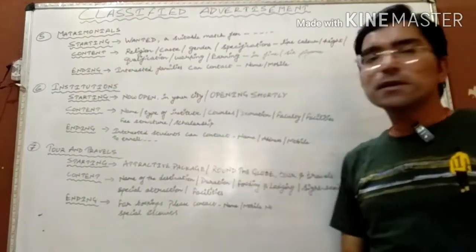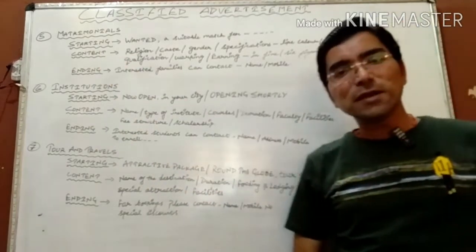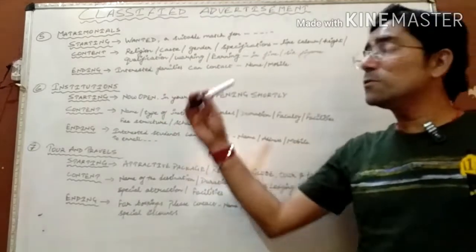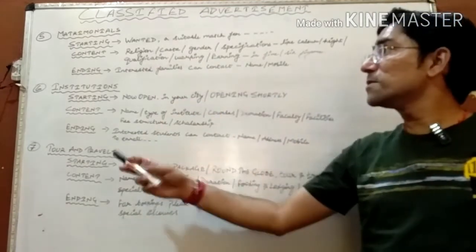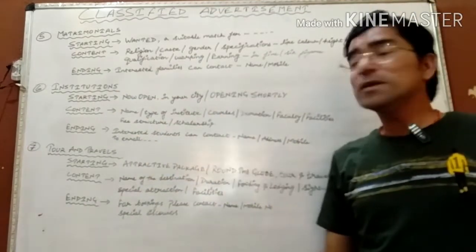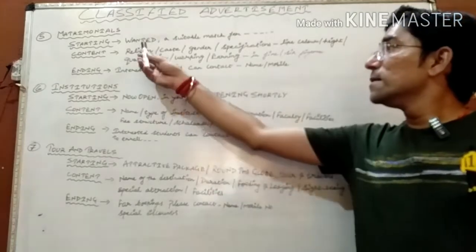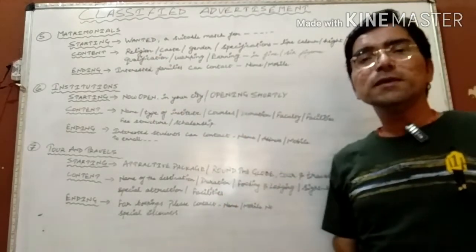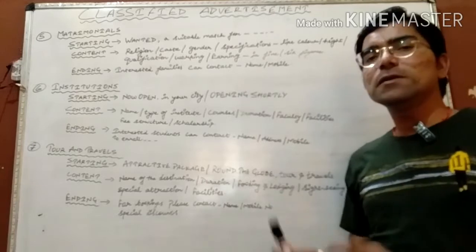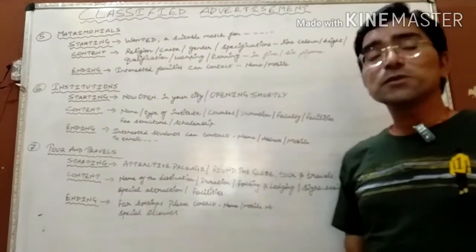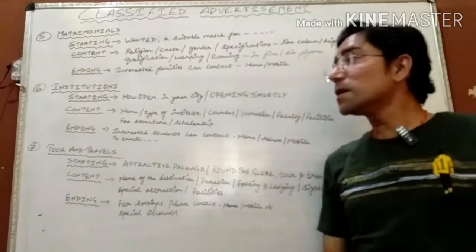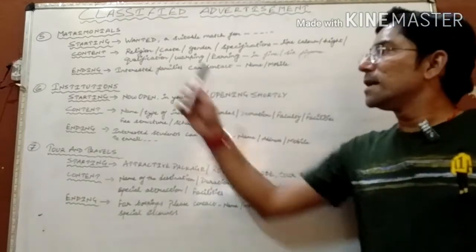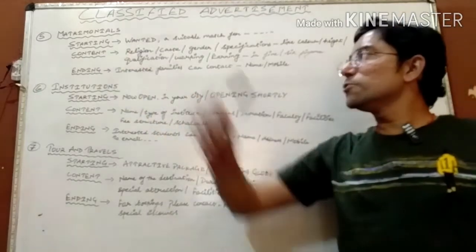So what is going to be the starting of a matrimonial advertisement? A matrimonial advertisement needs to start with 'Wanted a suitable match for...' — this is going to be your starting phrase for classified advertisements under the matrimonial category.